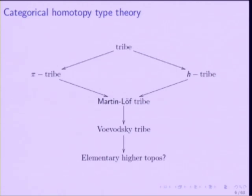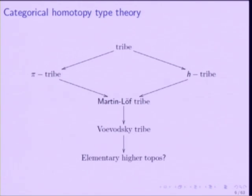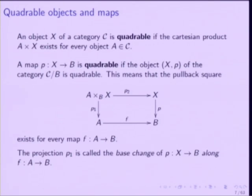What is categorical homotopy type theory? Here is the picture. It's based on the notion of tribe. There are two notions of tribes: pi-tribes and H-tribes. H is for homotopical tribes and pi is for product. Together you get the notion of Martin-Löf tribe. This notion was improved by Voevodsky, and we get the notion of Voevodsky tribe. And this should lead to the notion of elementary higher topos.